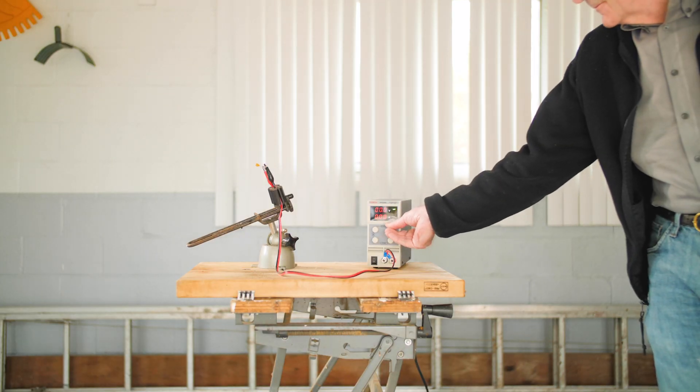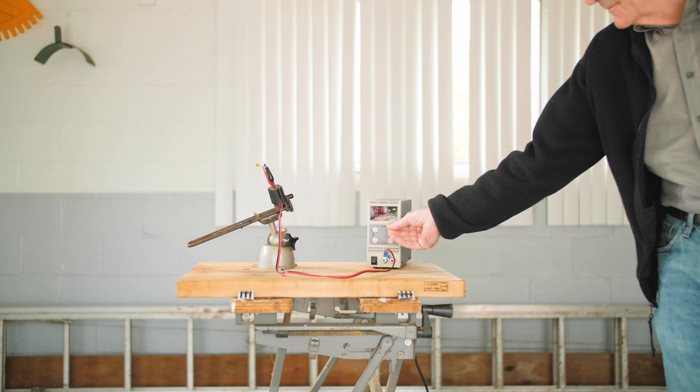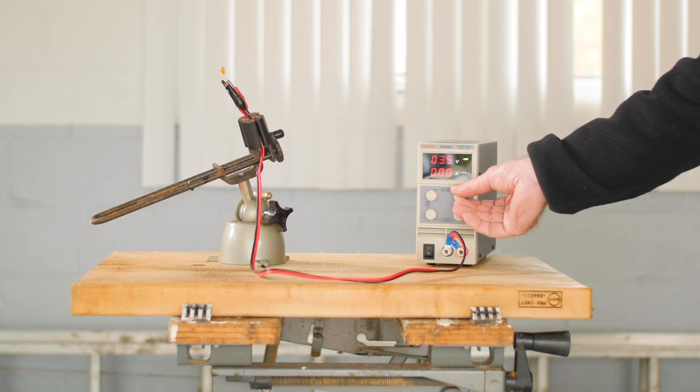Tantalum capacitors have a reputation for failing even more catastrophically than aluminum electrolytics when reverse biased. So of course we're going to test that theory. We'll start with zero volts reverse bias and slowly increase the voltage.